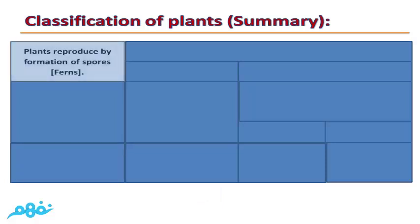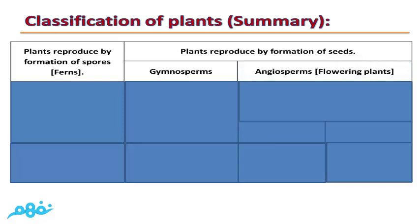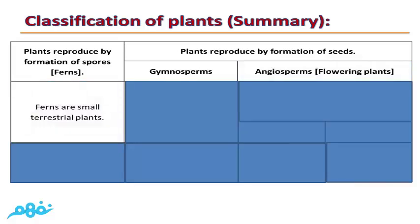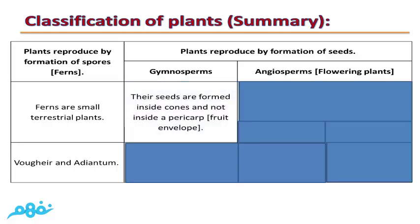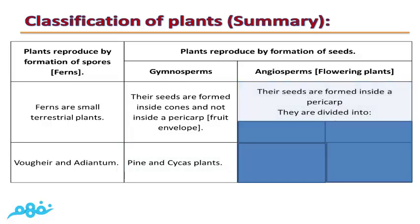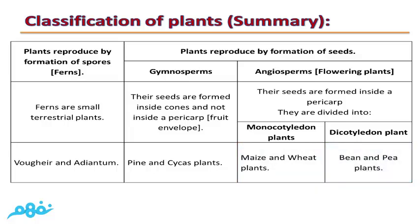Summary for classification of plants: Plants are divided into those reproduced by spores — ferns, which are small terrestrial plants such as Bougir and Adiantum — and those reproduced by seeds, which include Gymnosperms, whose seeds form inside cones such as pine and Cycas, and Angiosperms, whose seeds form inside a fruit and are divided into monocotyledon plants, such as maize, and dicotyledon plants, such as bean and pea.